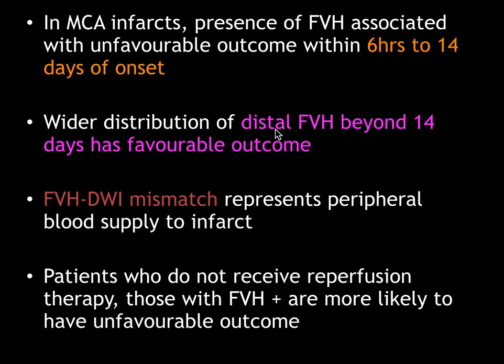We need to remember: distal FVH beyond 14 days has a good outcome because there is maintained leptomeningeal circulation to the region of infarct. The FLAIR vascular hyperintensity and diffusion mismatch represents that peripheral blood supply to the infarct is still maintained. Patients who do not receive reperfusion therapy and those with FLAIR vascular hyperintensity are more likely to have an unfavorable outcome. So, the presence of FVH in patients not going to receive reperfusion therapy indicates a poor prognosis.